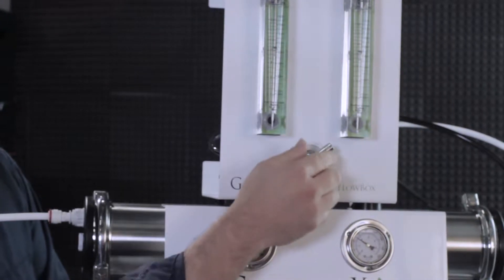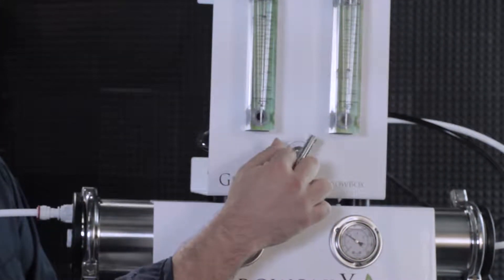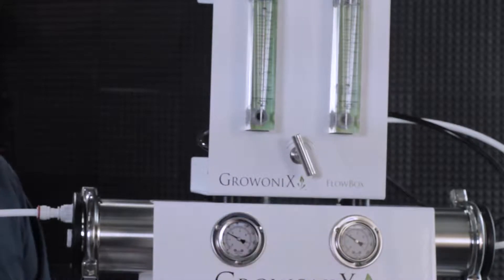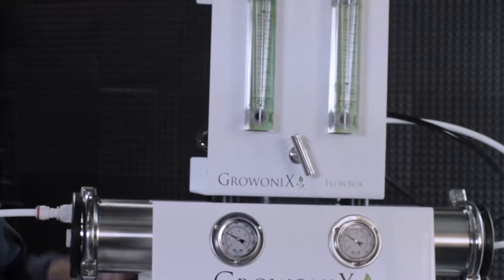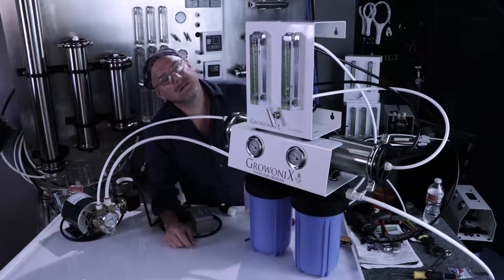To flush with the flow box, you simply turn the valve to the left and you're in flush mode. You're sending high pressure water through the membrane, purging out some buildup and pollutants.